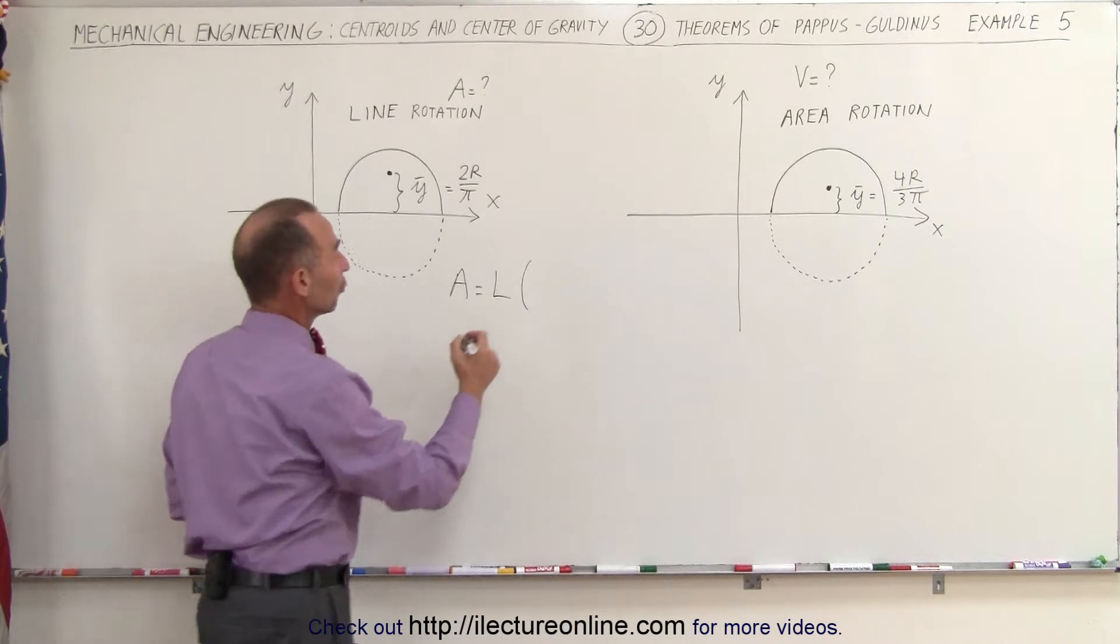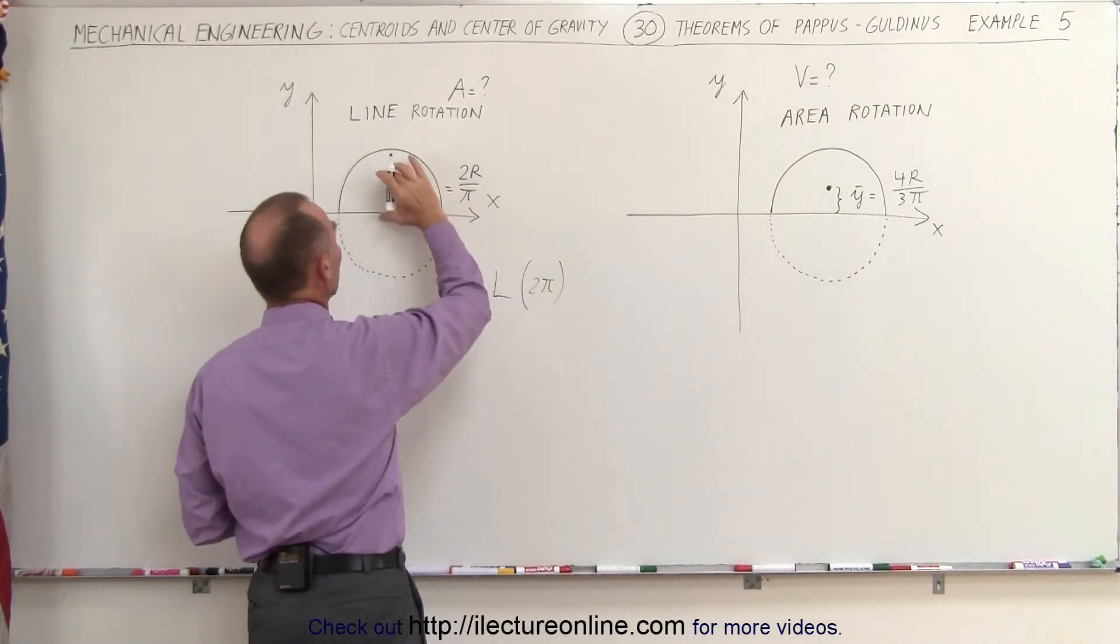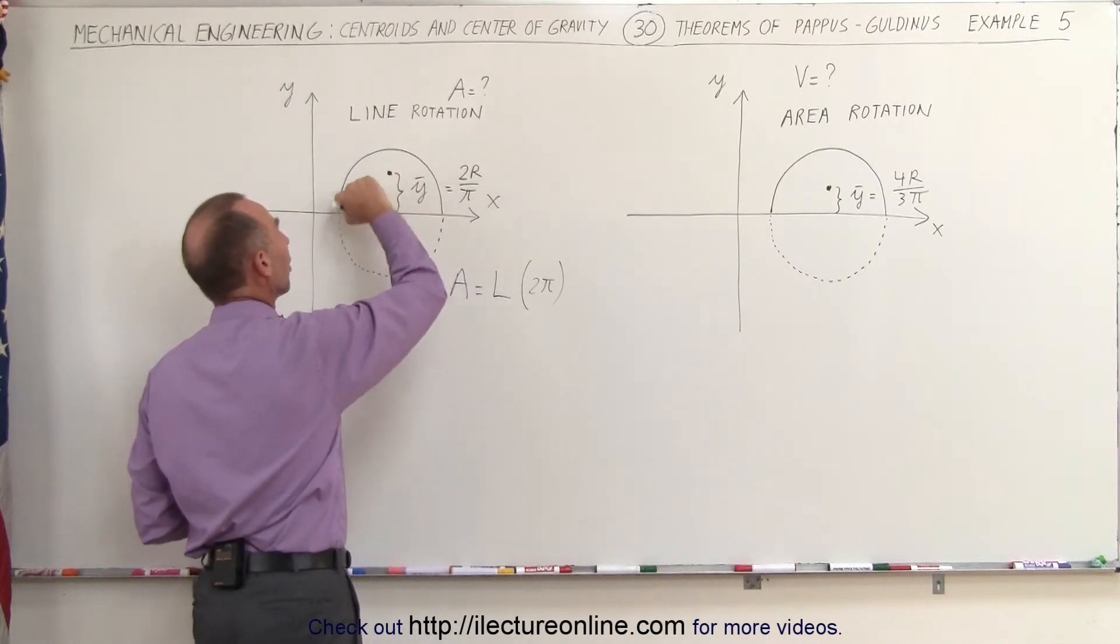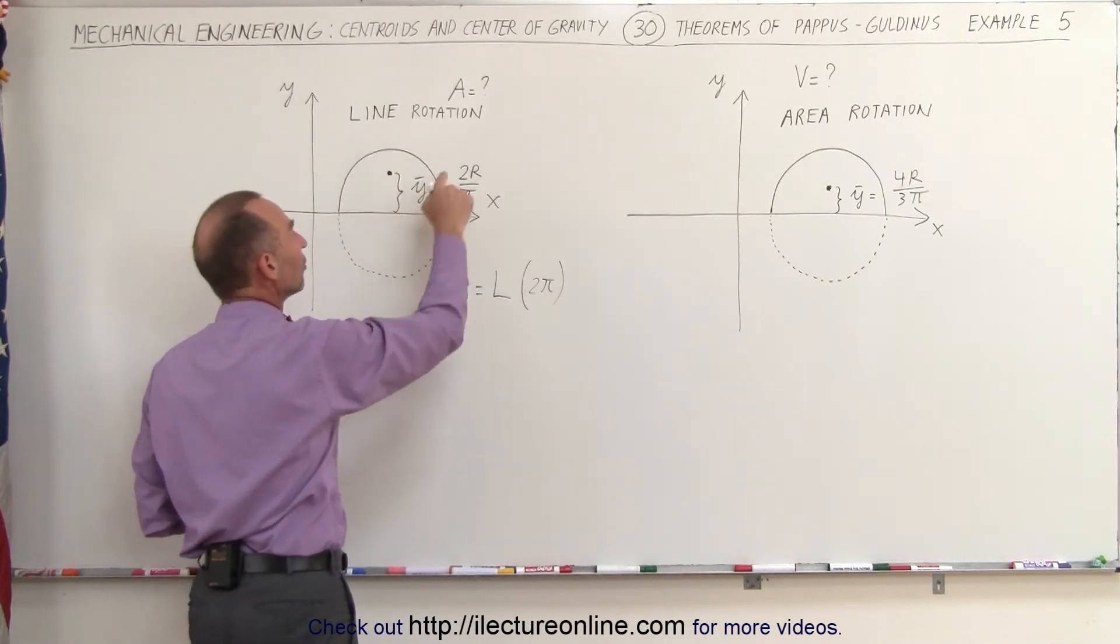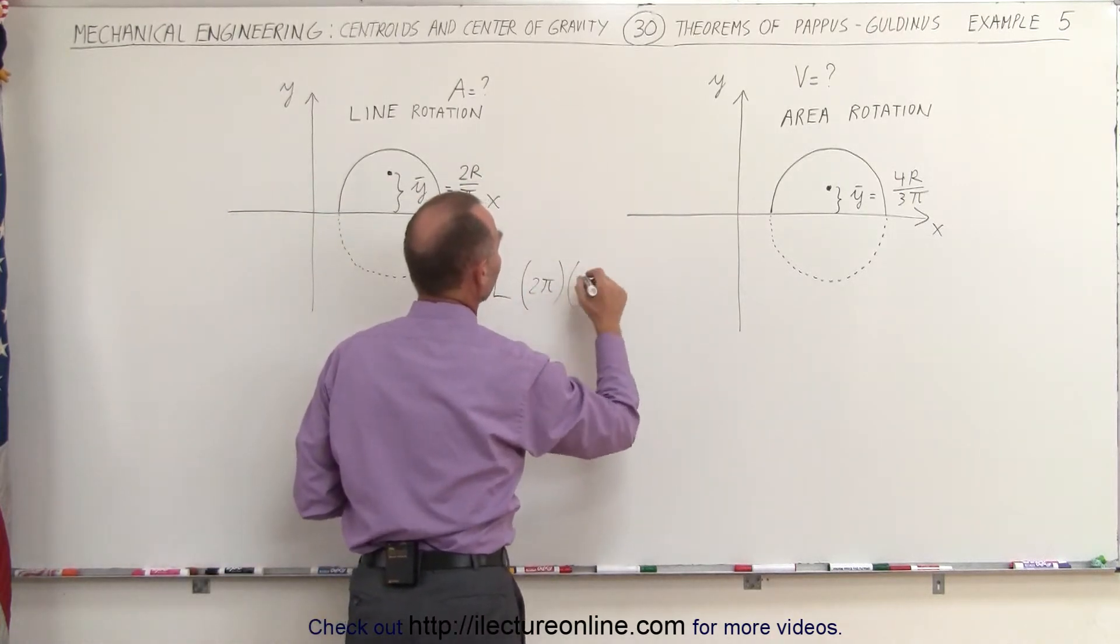The distance, therefore, is 2π times the radius of the circle, and the radius is going to be the y-coordinate of the center of mass of the line segment, which in this case is 2 times the radius divided by π. 2π times 2r divided by π.